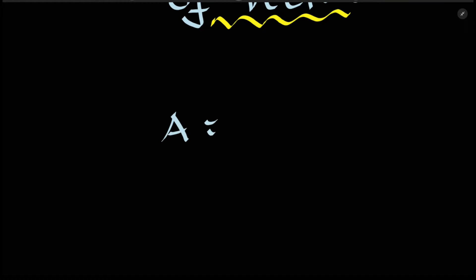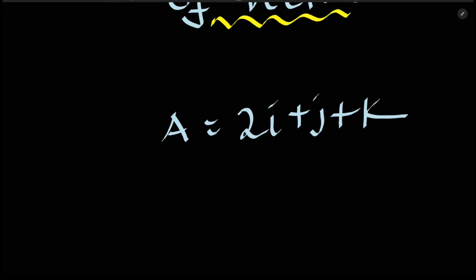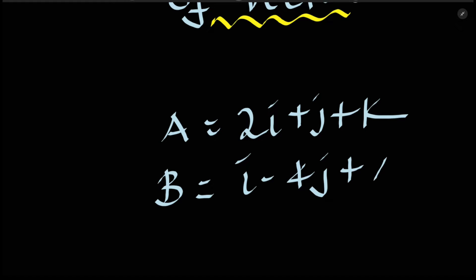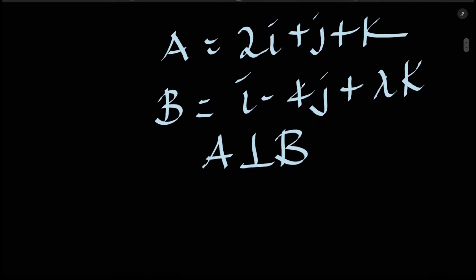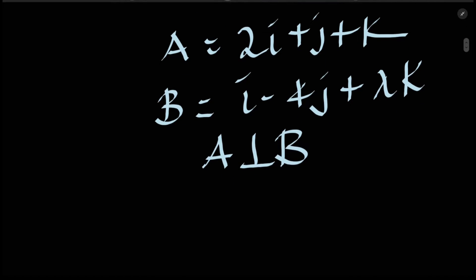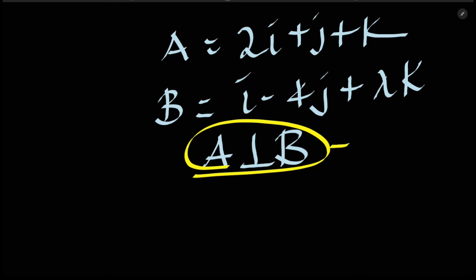Vector A is given by i plus j plus k, and vector B is given by i minus 4j plus lambda k. Vector A is perpendicular to vector B, so we need to find the value of lambda. Since they are perpendicular to each other, the dot product equals zero.